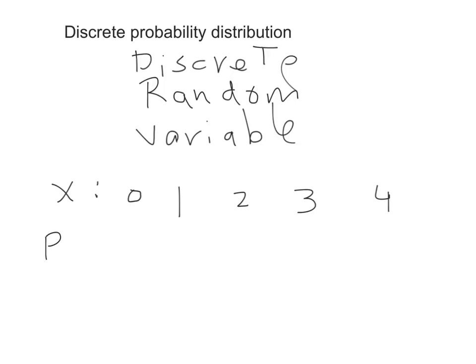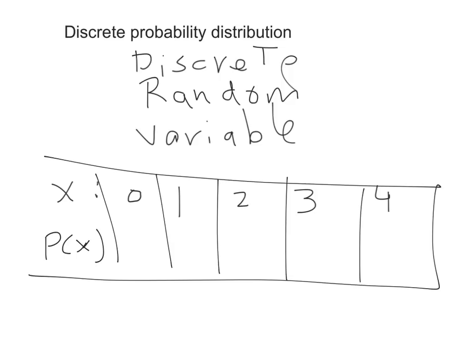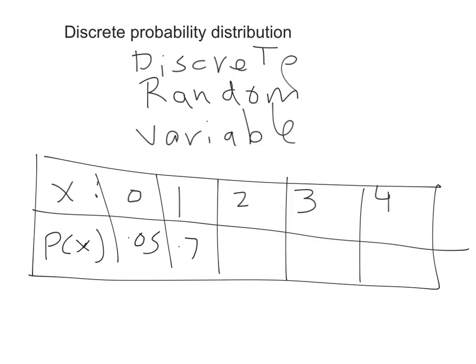Now we can assign a probability for each value. Let's put this in a table. Suppose the probability that a person has no mobile is 0.05, the probability of having one mobile is 0.7 — the majority — the probability of having two mobiles is 0.15, the probability of having three mobiles is 0.08, and the probability of having four mobiles is 0.02.